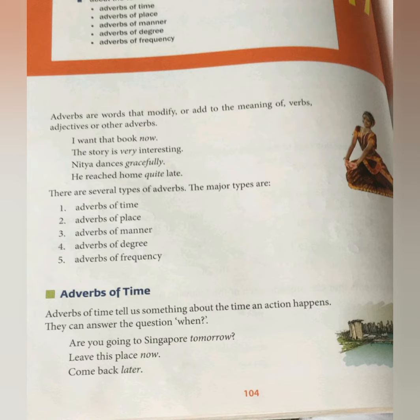Let us look at the given examples. 'I want that book now.' Here the verb is 'want' — when do you want that book? Now. 'The story is very interesting.' Here 'very' is the adverb. 'Nitya dances gracefully' — gracefully is the adverb; how does she dance? Gracefully. 'He reached home quite late.' Reached is the verb; when did he reach? Late. And 'quite' is the adverb here.